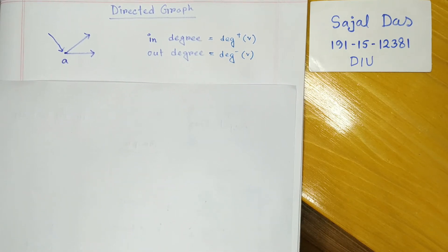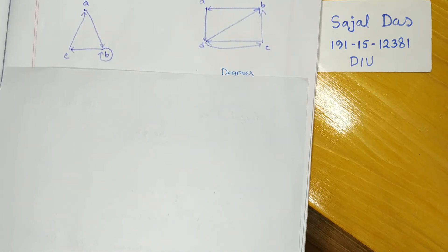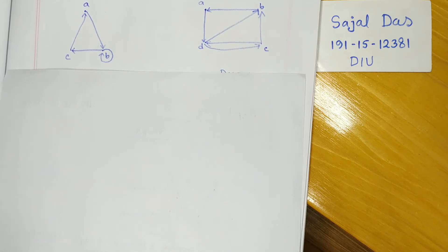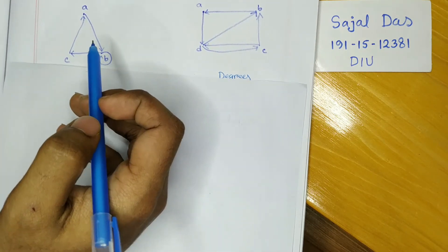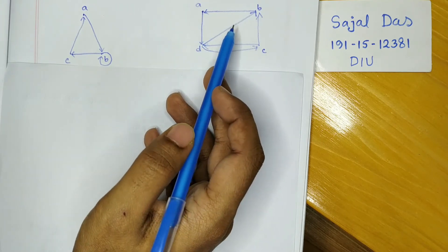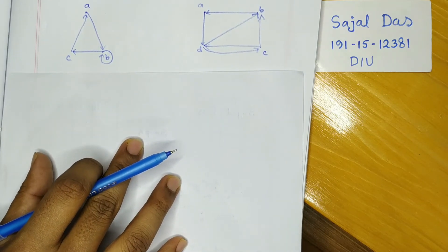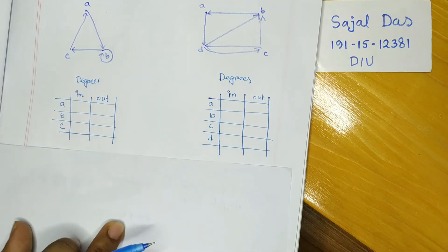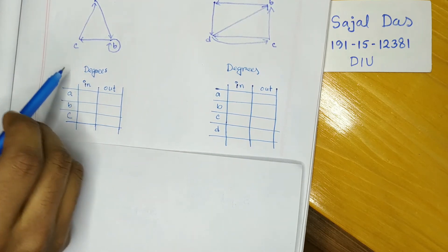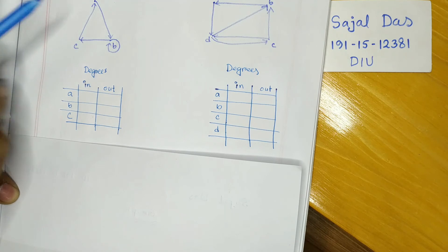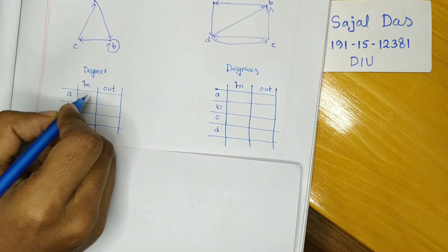Let's examine a few directed graphs. The first graph has three vertices a, b, and c, and also includes a loop. The second graph has four vertices a, b, c, and d. For the first graph, we need to find the degrees of each vertex.